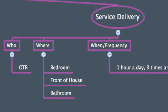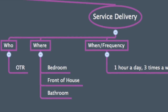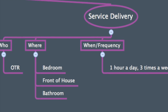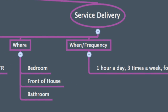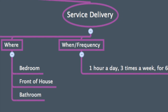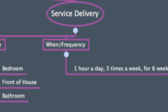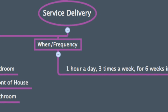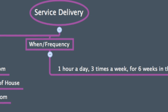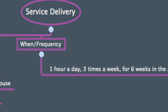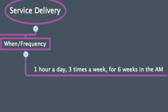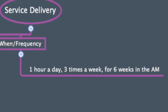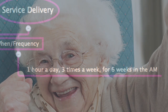Sophia will receive OT services from an OTR in her home or in the community one hour a day, three times a week, for six weeks. After six weeks, she will be reevaluated to see if a continuation of services is warranted.